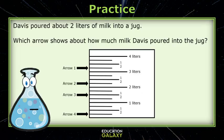Davis poured about two liters of milk into a jug. Which arrow shows about how much milk Davis poured into the jug?